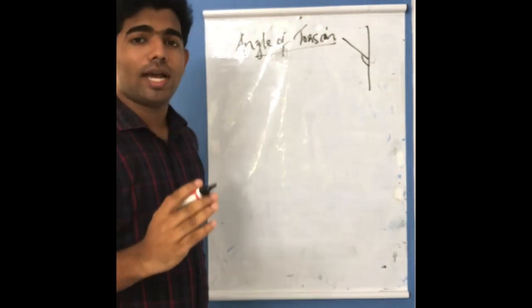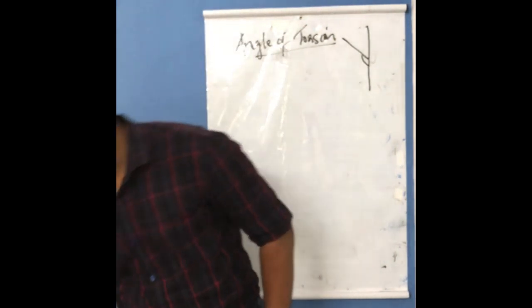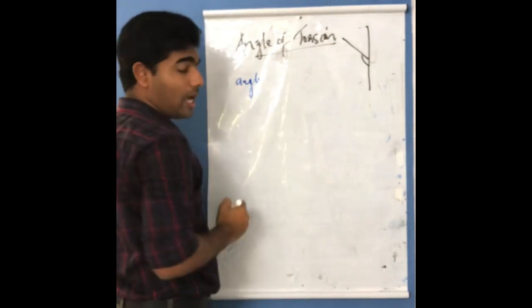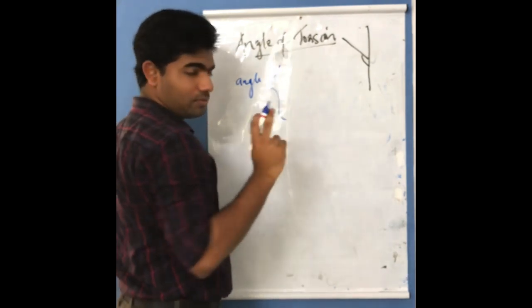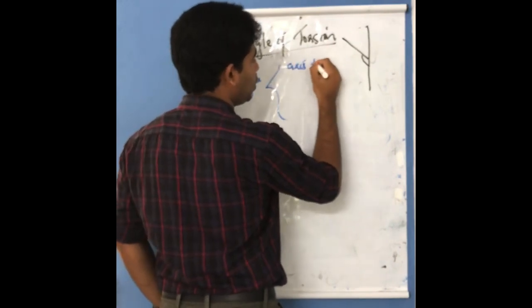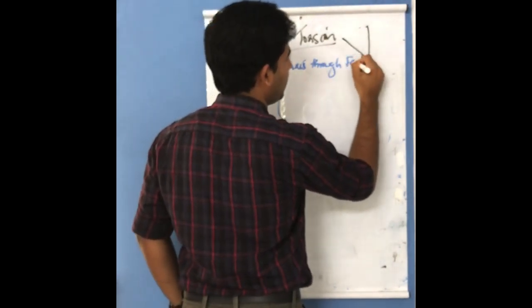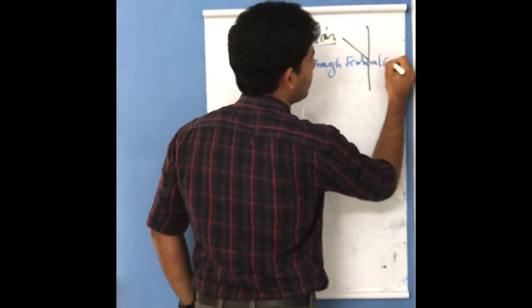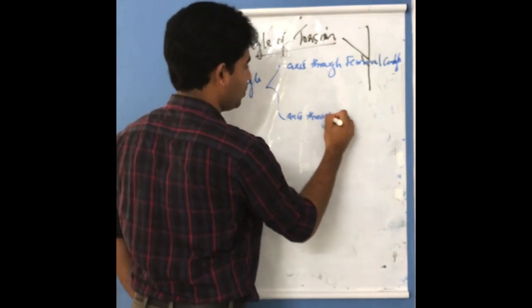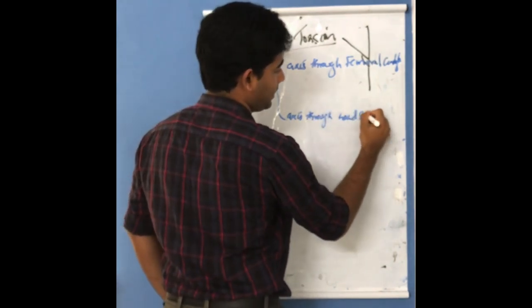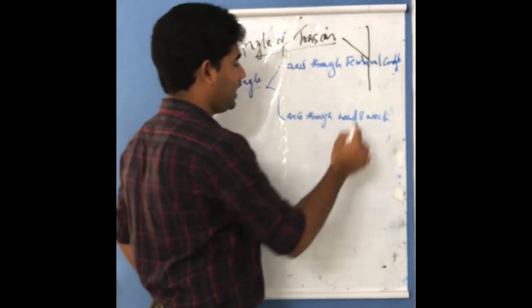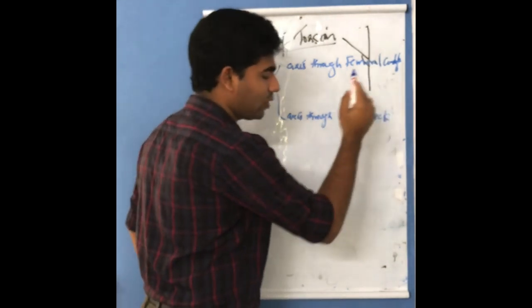What do you mean by angle of torsion of the femur? Angle of torsion is defined as an angle made between two things: an angle made between an axis through the femoral condyle and an axis through the head and neck of the femur. That is my definition - an axis through the femoral condyle and an axis through the head and neck of the femur.